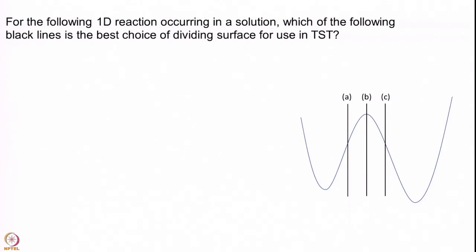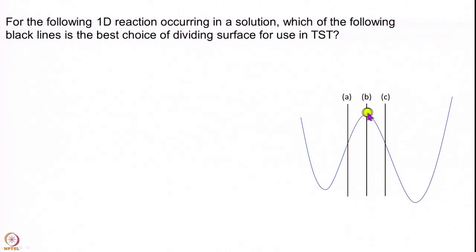This is a conceptual question. For a given one-dimensional surface in solution at some temperature T — where should I draw the transition state? Which is the best line representing the transition state? Is it A, where I draw the dividing surface here? Should I draw it at B? Or should I do my transition state theory with the C dividing surface? Take a pause and think about it.